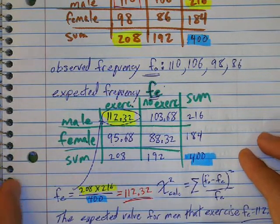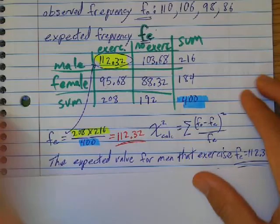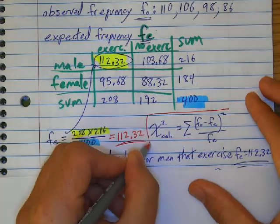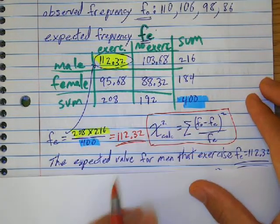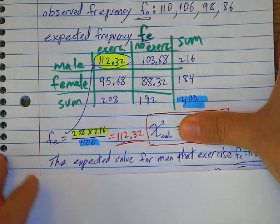Now to calculate the chi-squared, they use this formula, but just ignore that for now, right now. Don't look at that because that'll worry you.